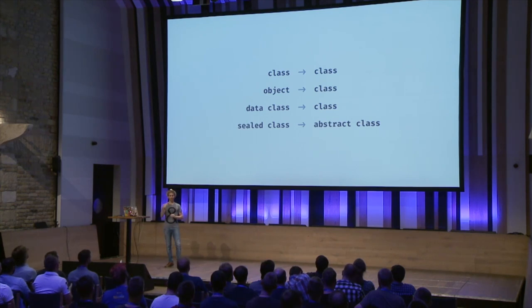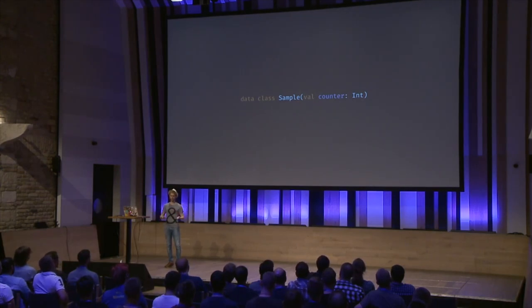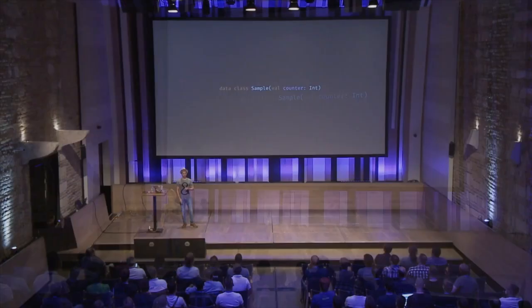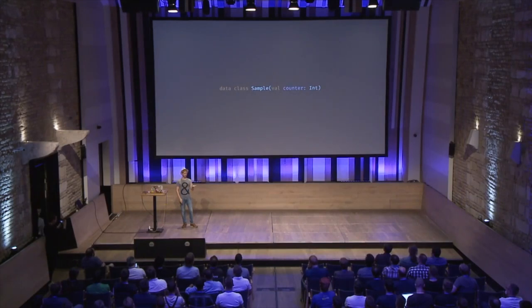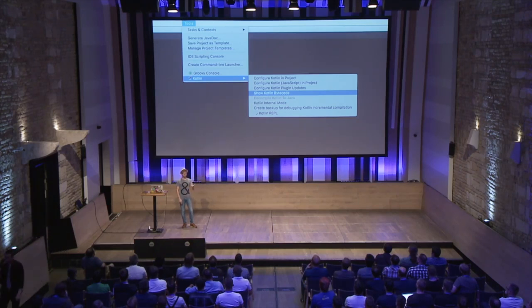Let's look at concrete examples. You have the most simple code you can imagine — a very simple data class with one value with a potentially primitive int. It's also interesting that in Kotlin there's no distinction between primitive and non-primitive, because that's again an implementation detail of the JVM. But in other platforms it could be different. If we compile this and use this little trick, you can see the bytecode generated from your code.